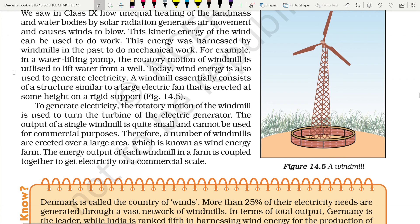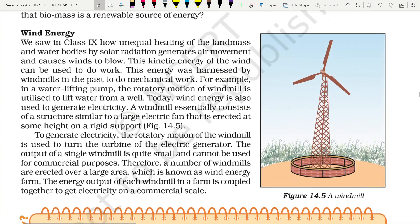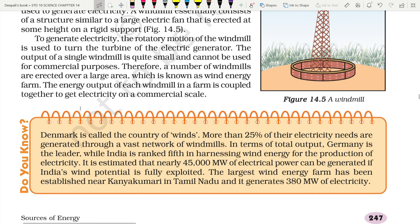In water lifting pumps, the rotatory motion of a windmill is utilized to lift water from a well. Today, wind energy is also used to generate electricity. A windmill essentially consists of a structure similar to a large electric fan, erected at a height on a rigid support. The rotatory motion of the windmill is used to turn the turbine of an electric generator. Since the output of a single windmill is quite small, a number of windmills are erected over a large area, known as a wind energy farm, where the output of each windmill is coupled together to get electricity on a commercial scale.